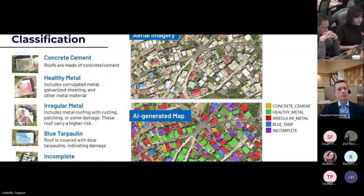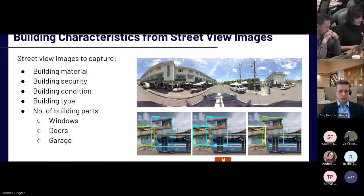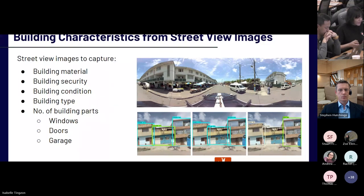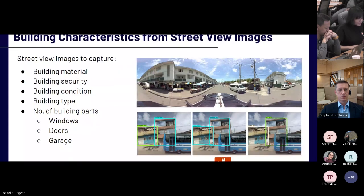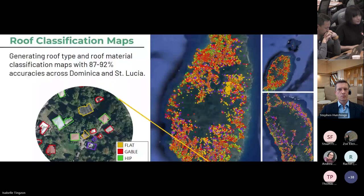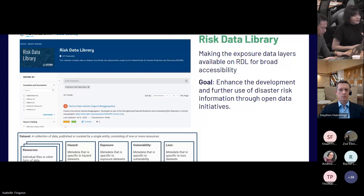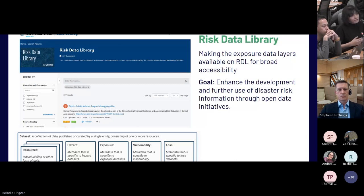We're also exploring the use of street view images to extract street-level building attributes such as material, security, and condition. The output of this project is exposure data layers generated across St. Lucia, Grenada, and Dominica, with accuracies of around 87 to 92 percent. I've been working with Matthew over the past several weeks to make these exposure data layers available on the RDL for broad accessibility. Our goal is to enhance the development and further use of disaster risk information through these open data initiatives.